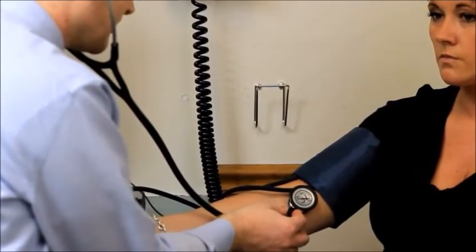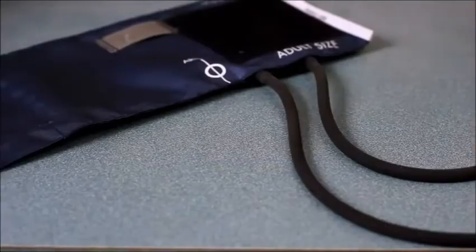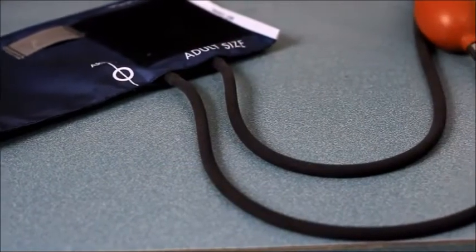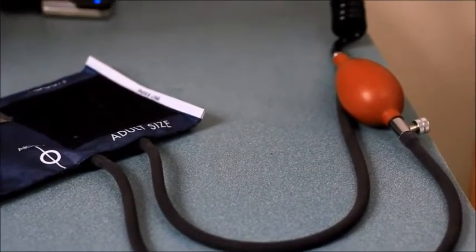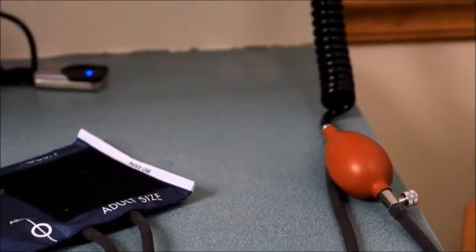The bell of the stethoscope should be used as it permits better auscultation of Korotkoff sounds. A sphygmomanometer consists of a blood pressure cuff containing a distensible bladder, a rubber bulb with an adjustable valve, and a flexible tubing. The tube connects to a manometer which measures the pressure within the cuff.